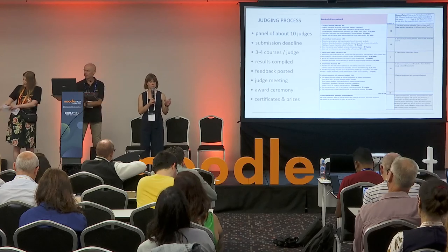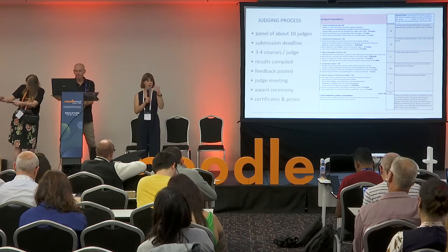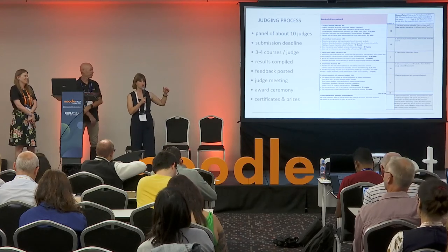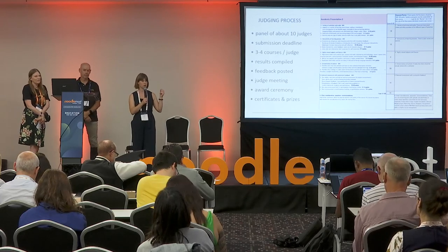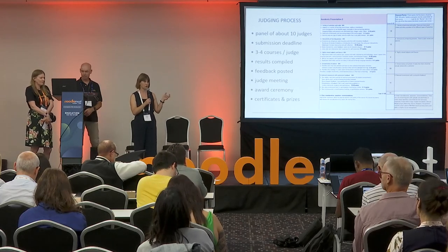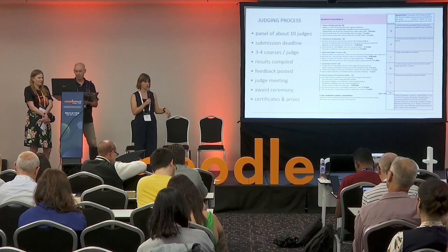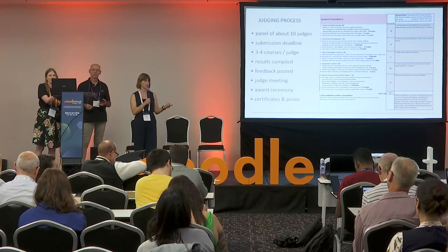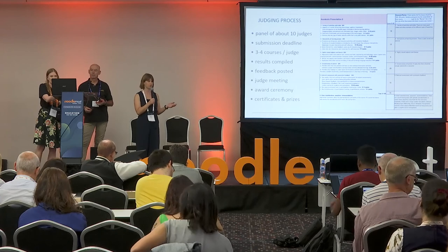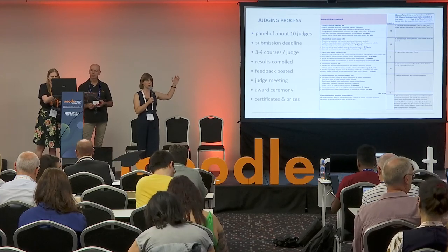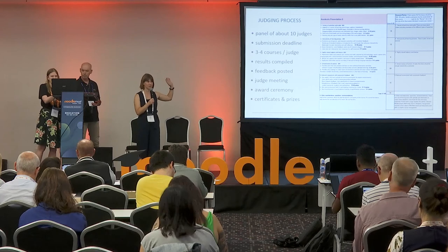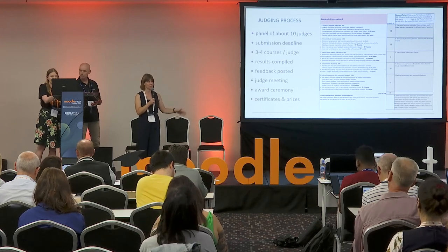For the Estonian system: three judges will assess three courses. If they can't reach consensus, a really experienced mentor will help them out. As for prestige, the institution doesn't see the feedback — only the course author, because they have to log into the online system. But the course author could take it to their manager and say this is a good course because it received the label.